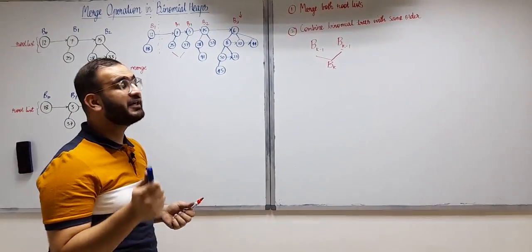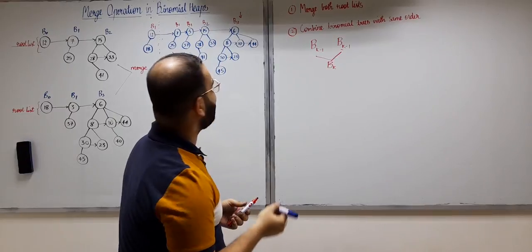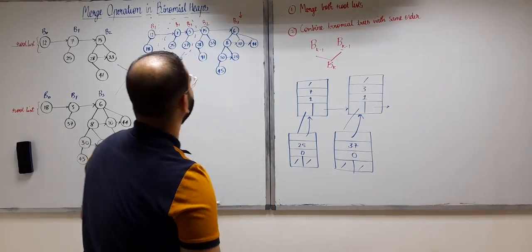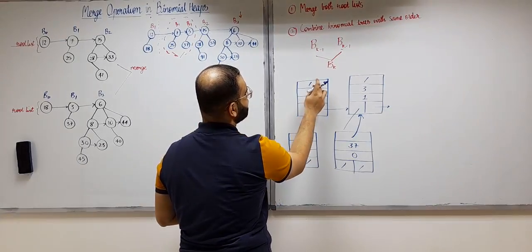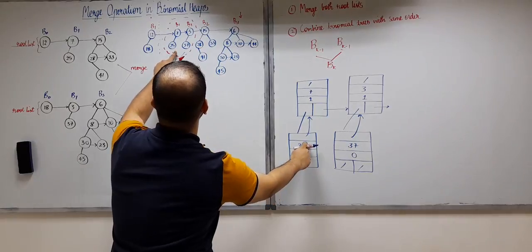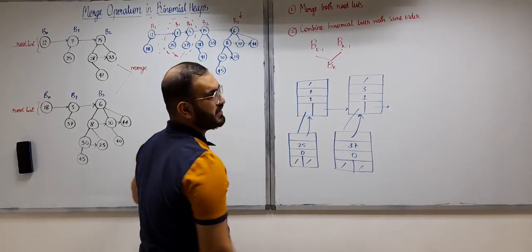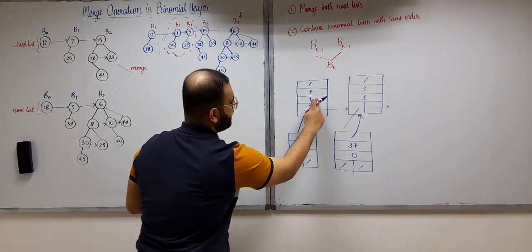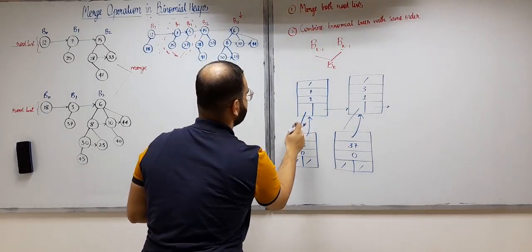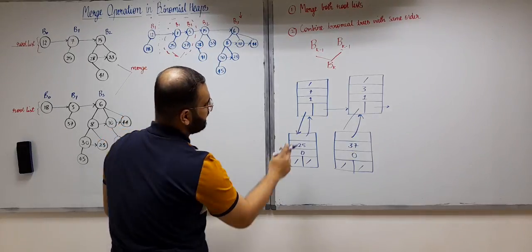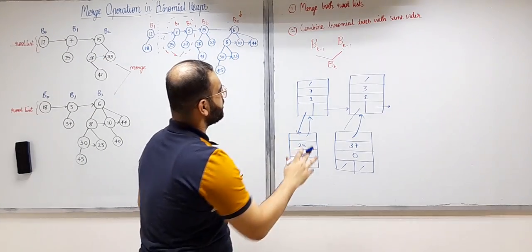Before merging those two B1 trees, let's recall the node structure. Each node has: a pointer to the parent, a degree field (number of children), a pointer to the leftmost child, and a pointer to the immediate right sibling. For the B1 with root 7 and child 25: parent of 25 points to 7, degree of 7 is 1, child pointer of 7 points to 25, and the sibling pointer is null.